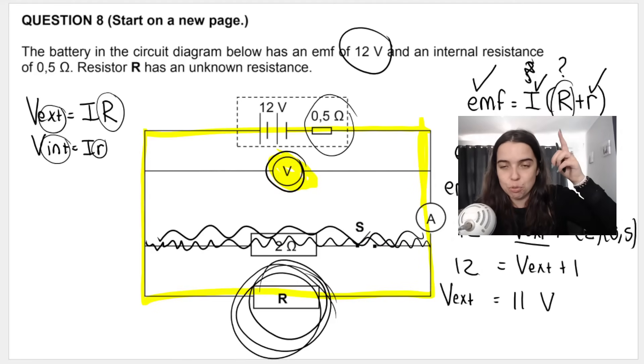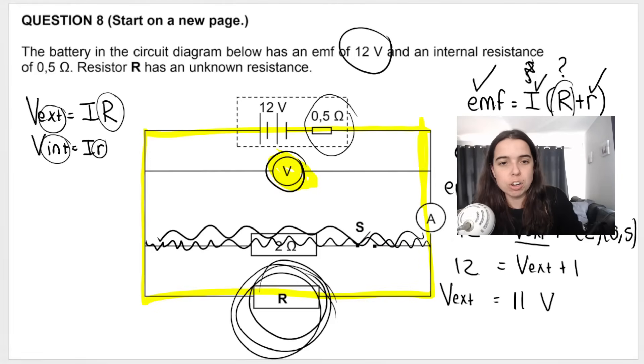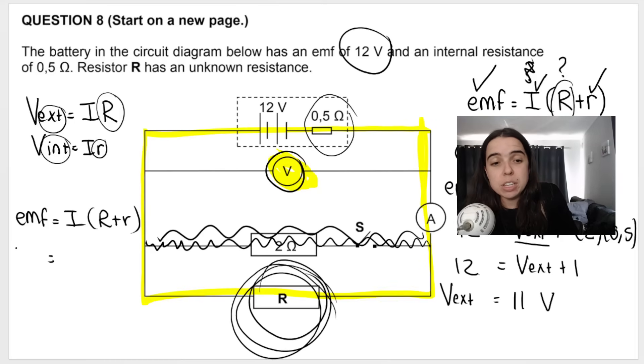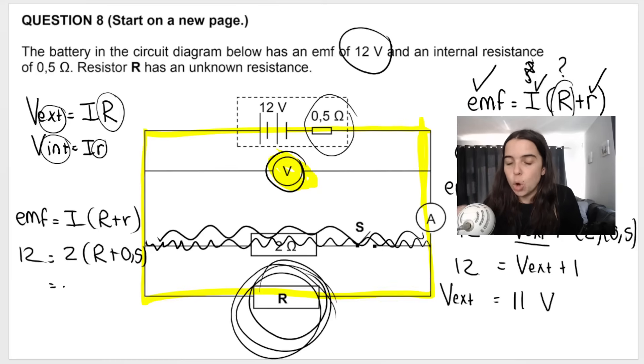Now revisiting this initial formula over here that I said earlier that we can't use, I forgot that they gave us current. If we rewrite it, EMF equals I times big R plus baby R. We know that EMF is 12. We also know that current is two. We don't know what big R is and we know that baby R is 0.5. If we did it this way, we could actually end up getting big R. And then once we get big R, we can work out V external this way. So that's what's nice about circuits. There's multiple different ways. So let's do it.